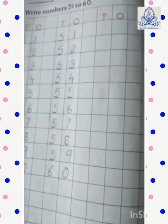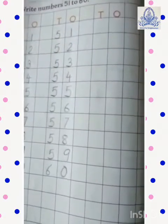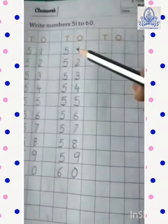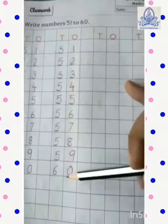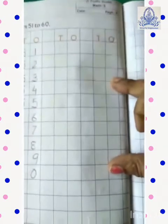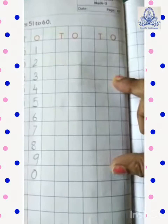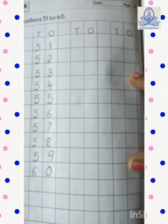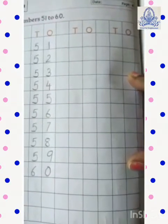Okay, kids. Okay, kids, समझ में आया क्या करना है? अब आपको इसी वे में 51 to 60 यहाँ पे 2 टाइम्स और लिख करके यह page complete करना है. Understood? 51 to 60.